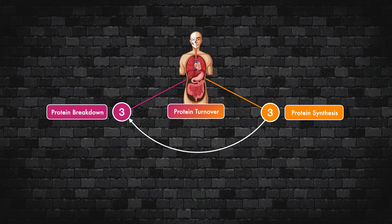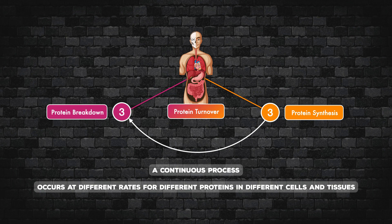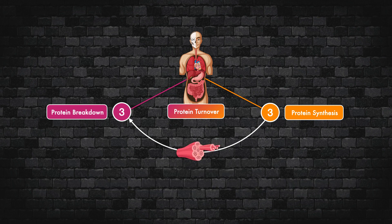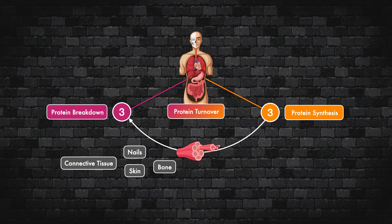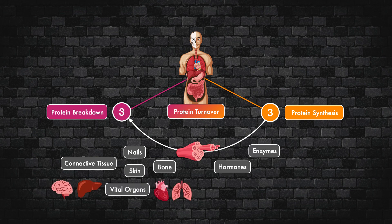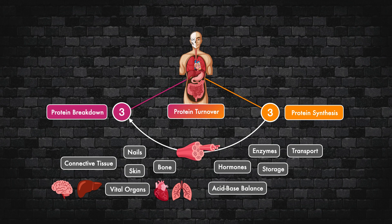Collectively, protein breakdown and protein synthesis are components of protein turnover. This is a continuous process that occurs at different rates for different proteins in different cells and tissues throughout the body. Usually when we talk about it, it's in the context of skeletal muscle, since that's the largest reservoir, accounting for approximately 50% of all of the amino acids that are stored. However, protein turnover also constitutes the proteins that make up the bone, skin, nails, and connective tissue, the vital organs, enzymes and hormones, and the proteins that participate in the transport and storage of other nutrients, acid-base balance, and fluid and electrolyte balance.